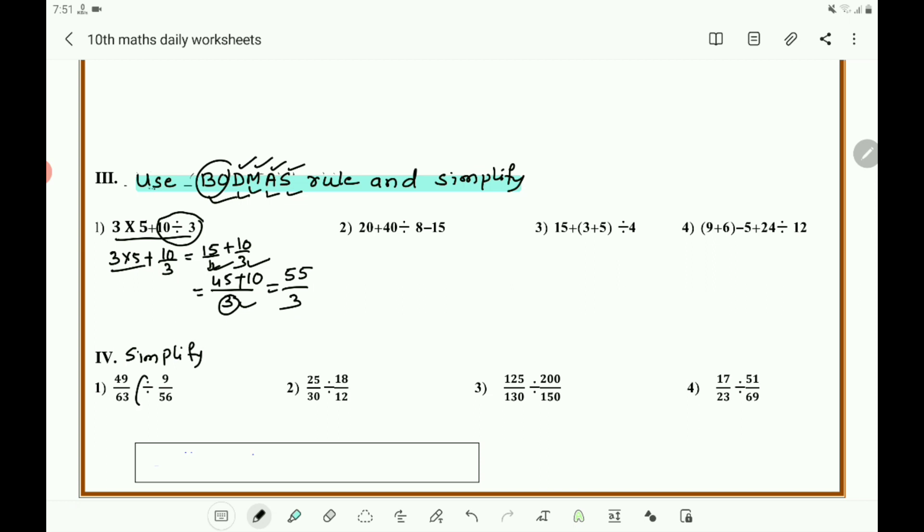Simplify. In all the questions there is division, and division is nothing but multiplication. To multiply, take the reciprocal of the second one. Take this example: write 49/63 as it is, then write × (into means) take this 56/9, take the reciprocal, 9/56 becomes 56/9.